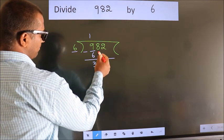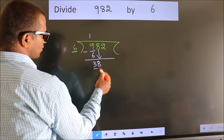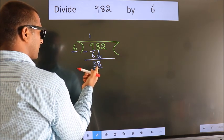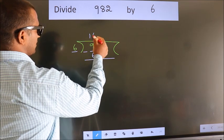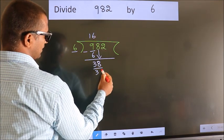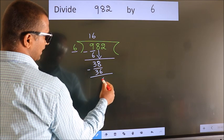After this, bring down the beside number. So 8 down. So 38. A number close to 38 in the 6 table is 6 times 6 is 36. Now we subtract. We get 2.